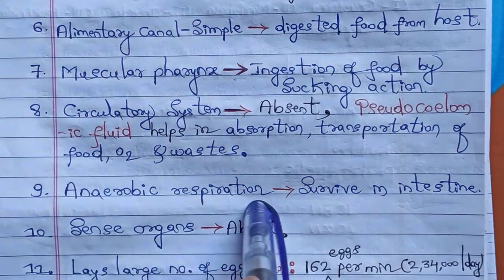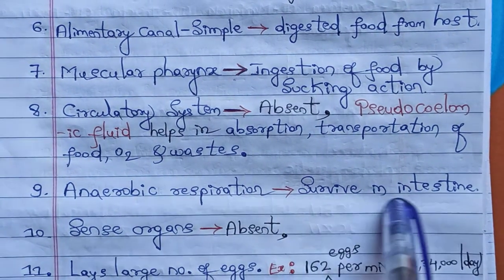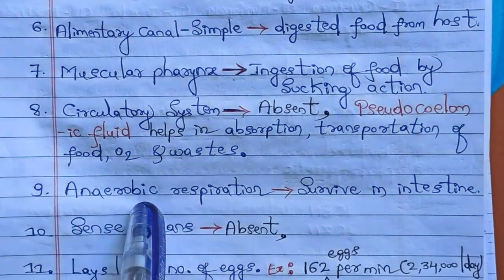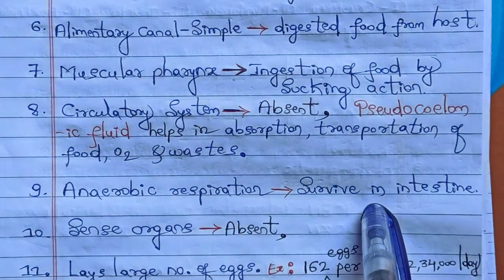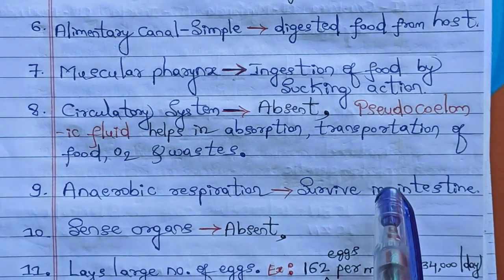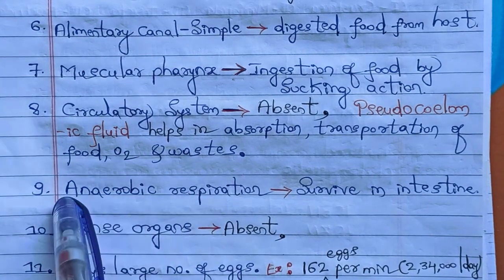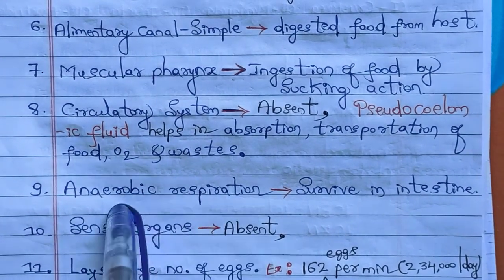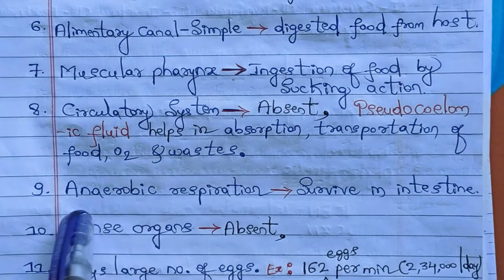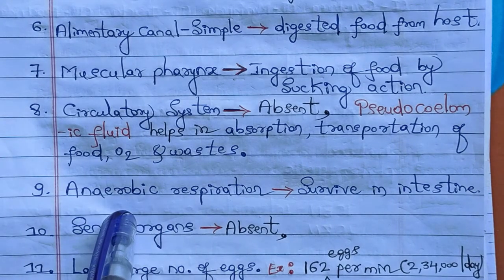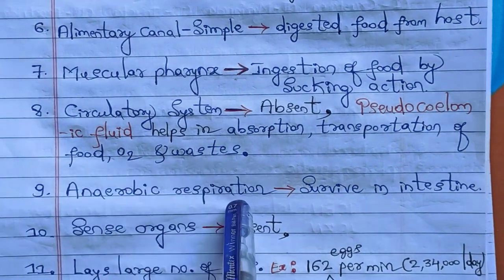Ascaris has the capacity to survive in the intestine even in the absence of oxygen, since the intestine is essentially free from oxygen. In this condition, it can respire through anaerobic respiration — respiration that takes place in the absence of oxygen. Ascaris shows anaerobic respiration and can therefore survive in the intestine.